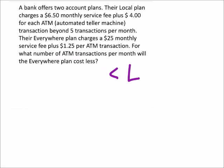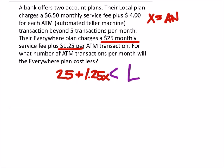The everywhere plan, as we can see, charges $25 a month. So we've got the $25 plus $1.25 per every transaction. So if we let X be an ATM transaction, then we're in good shape.